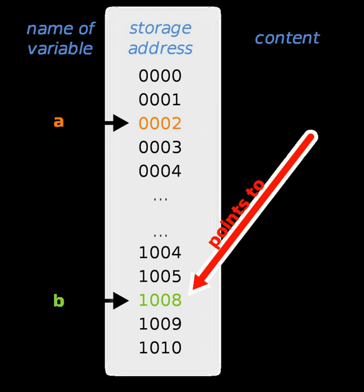In computer science, a pointer is a kind of reference. A data primitive, or just primitive, is any datum that can be read from or written to computer memory using one memory access; for instance, both a byte and a word are primitives. A data aggregate, or just aggregate, is a group of primitives that are logically contiguous in memory and that are viewed collectively as one datum; for instance, an aggregate could be three logically contiguous bytes.